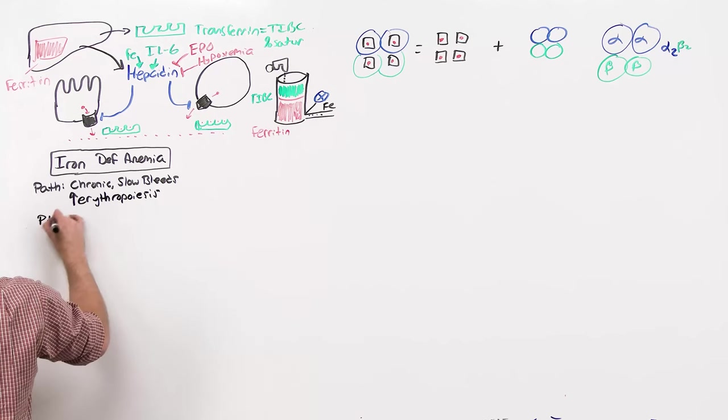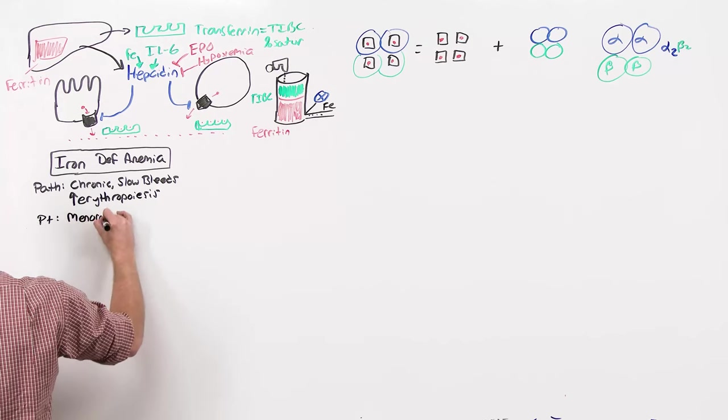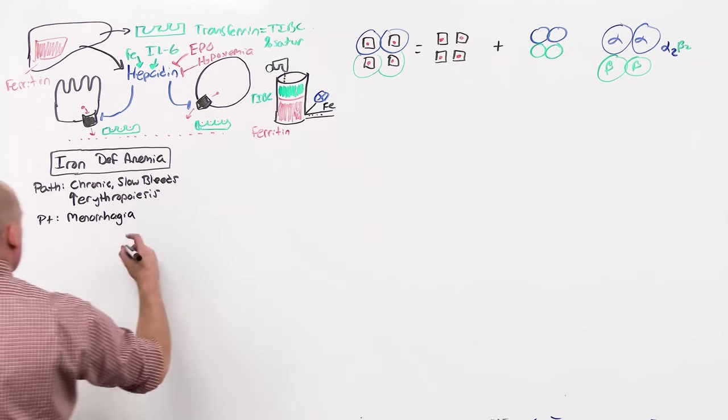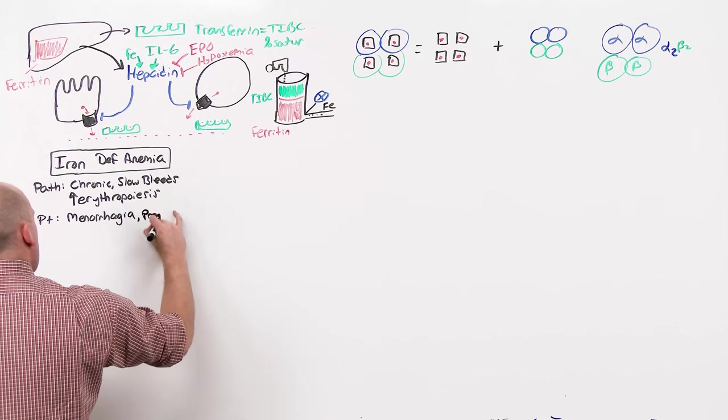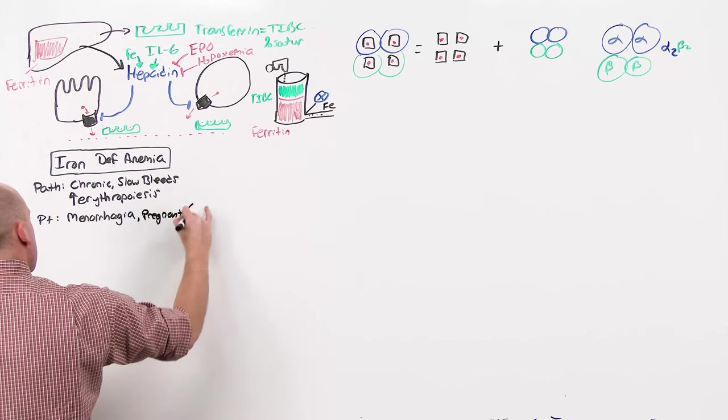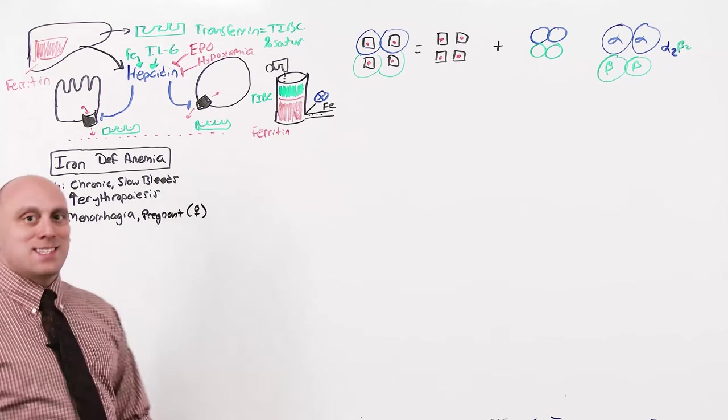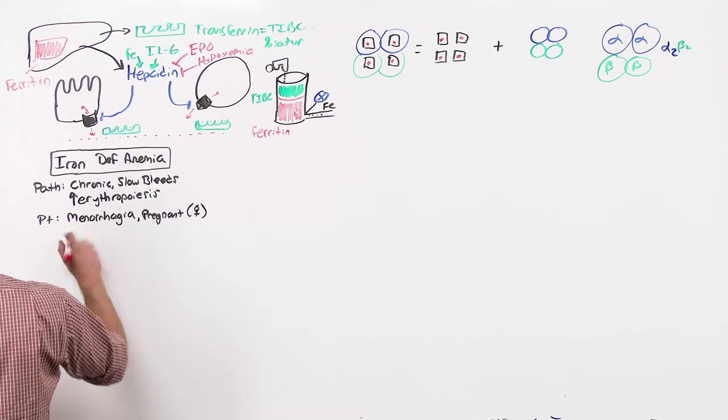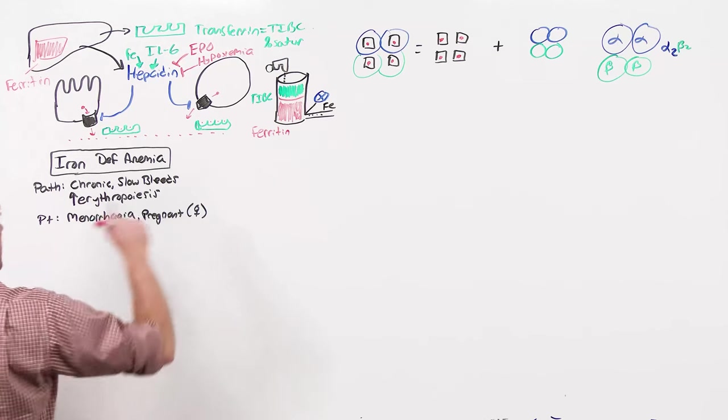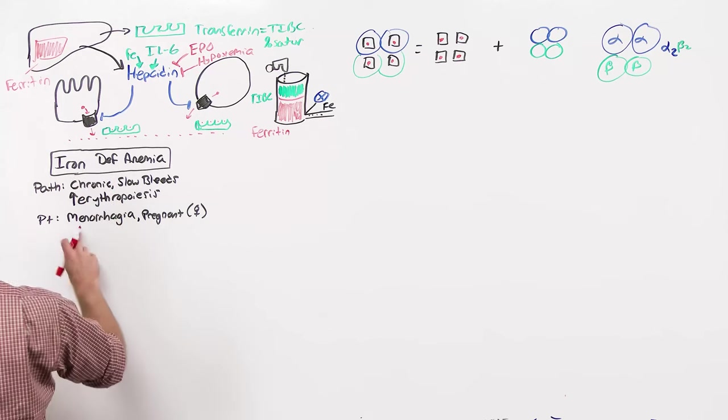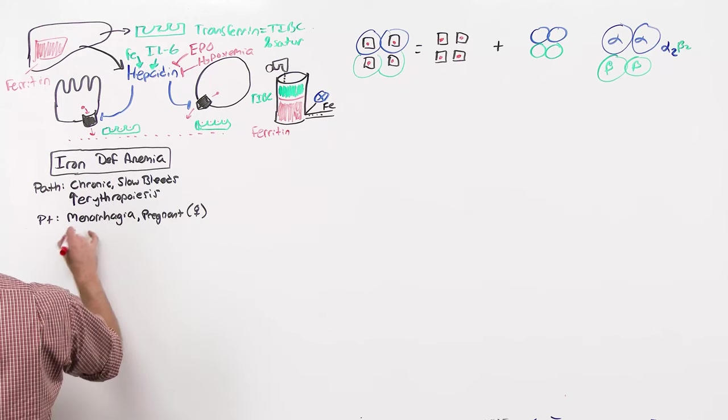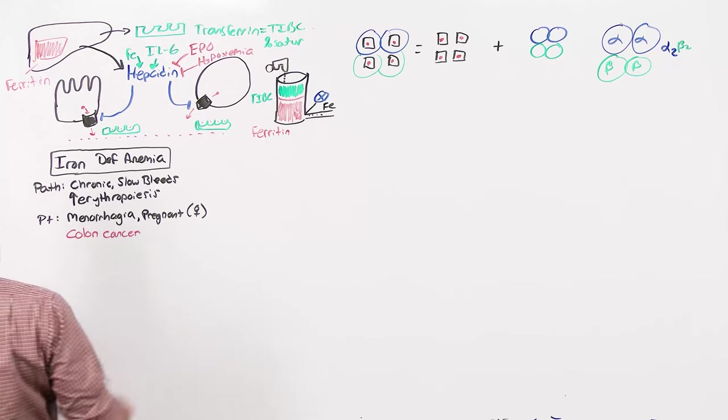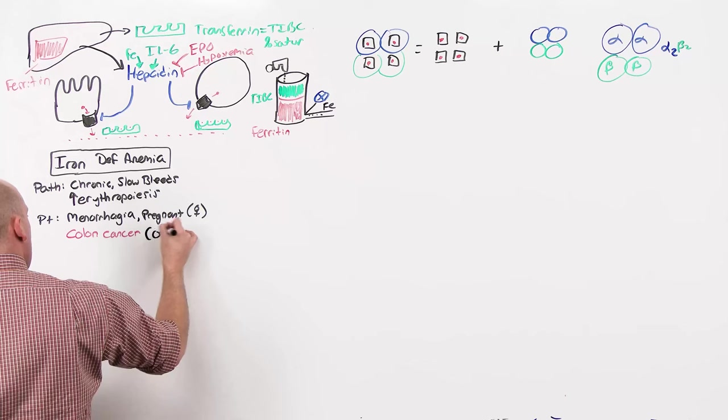The patients are going to be those with menorrhagia, that is heavy menses, that increase demand to replace those red blood cells that are lost, and those who are pregnant. Mom's blood volume and blood increases, and baby needs iron to make its hemoglobin. Anyone who is a postmenopausal female, but any male presenting with iron deficiency anemia who has no reason to be bleeding, is assumed to have colon cancer until proven otherwise. The male presentation of iron deficiency anemia is colon cancer, get a colonoscopy.